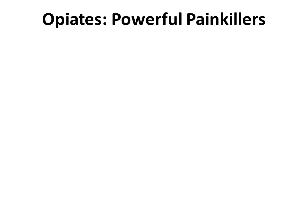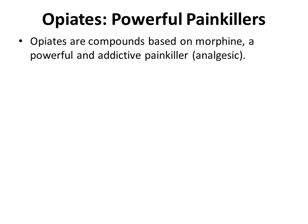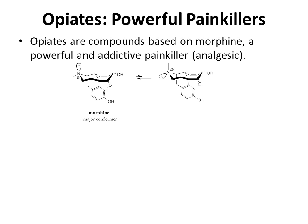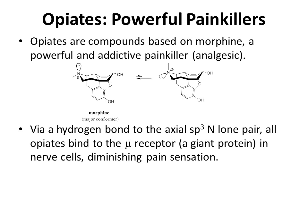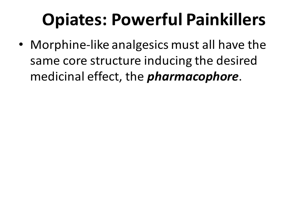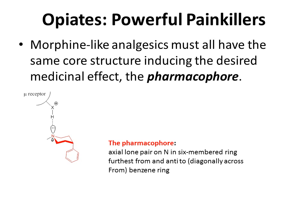Opiates are powerful painkillers — compounds based on morphine, a powerful and addictive analgesic. In the structure of morphine, there is a nitrogen whose lone pair prefers to be in the axial position. Via a hydrogen bond to the axial sp3-nitrogen lone pair, all opiates bind to the mu receptor, a giant protein in nerve cells, diminishing pain sensation. Morphine-like analgesics must all have the same core structure to induce the desired medicinal effect — this is called the pharmacophore. The pharmacophore contains the axial lone pair on nitrogen in a six-membered ring furthest from an anti (diagonally across) benzene ring.